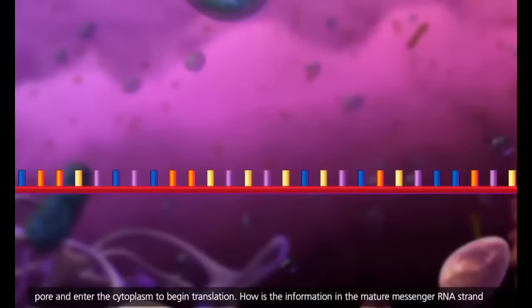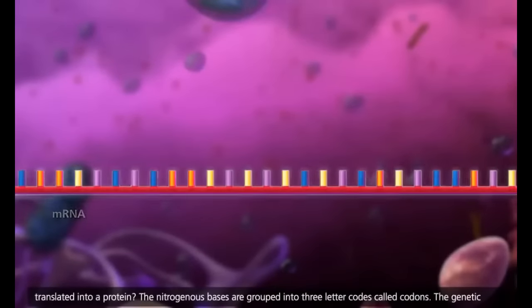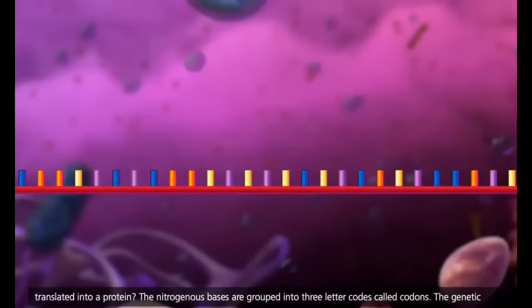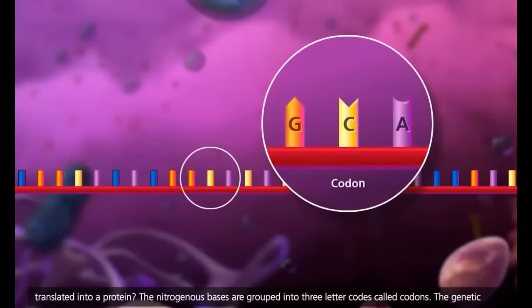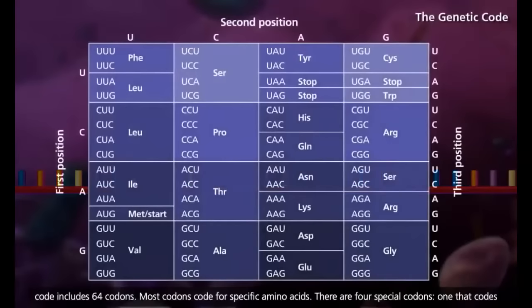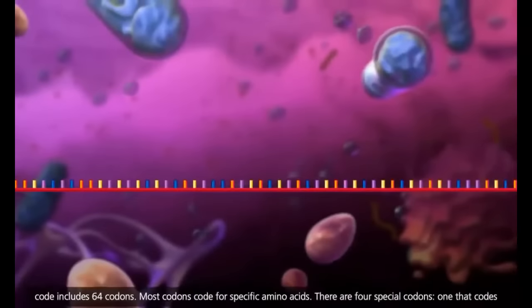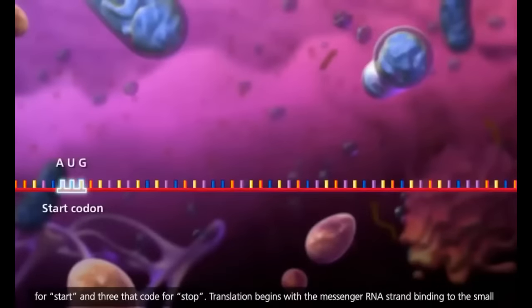How is the information in the mature messenger RNA strand translated into a protein? The nitrogenous bases are grouped into three-letter codes called codons. The genetic code includes 64 codons. Most codons code for specific amino acids. There are four special codons: one that codes for start and three that code for stop.